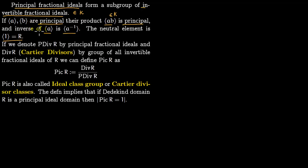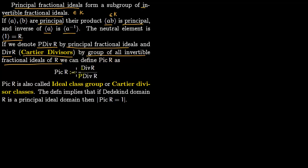We now come to the definition of the Picard group. We write principal fractional ideals as PrinDiv(R), that is, principal divisors of R. Div(R), the invertible fractional ideals, are also called Cartier divisors. We define Pic(R) as the invertible fractional ideals — that is, Div(R) — modulo out the principal divisors PrinDiv(R). So Pic(R) = Div(R) / PrinDiv(R).